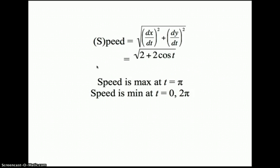I also wanted to find the time when the point was traveling the fastest, and when it was traveling the slowest. Using calculus, I found the maximum speed at time t equals pi, and the minimum speed at time t equals 0, and t equals 2 pi.